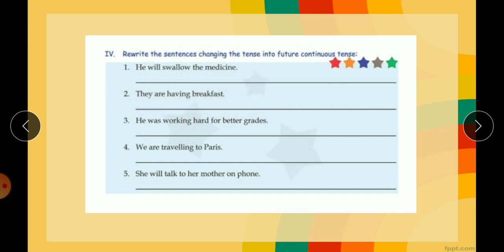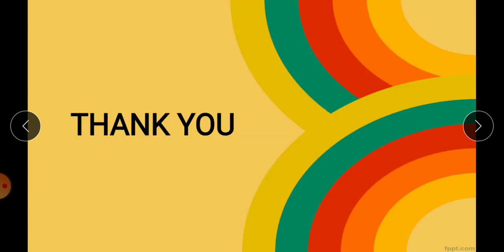They are having the breakfast. Having is already in ing form, so just change are to will be. They will be having breakfast. He was working hard. Working is already in ing form, so just convert was to will be. He will be working hard for better grades. We are traveling to Paris. Traveling is already in ing form, so just change are to shall be. We shall be traveling to Paris. She will talk. Talk is the verb, it is in the first form, just put ing. She will be talking to her mother on phone. So these are the book exercises you have to complete in your book. Thank you.